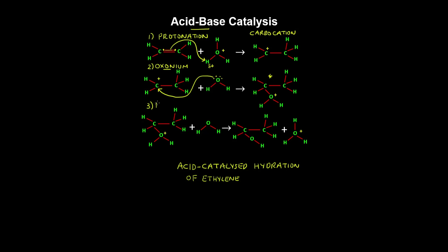Step three involves a deprotonation of the oxonium cation to regenerate the hydronium ion. The catalyst is hydronium, which is consumed to speed up the rate limiting step and regenerated in a subsequent step. The carbocation and the oxonium cation are intermediates, which get generated in one step and consumed in a subsequent step.